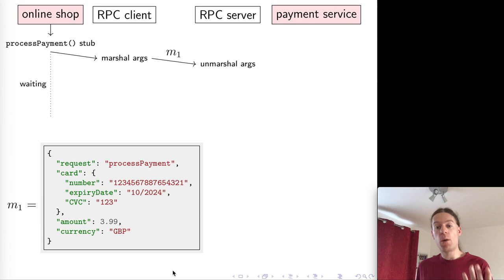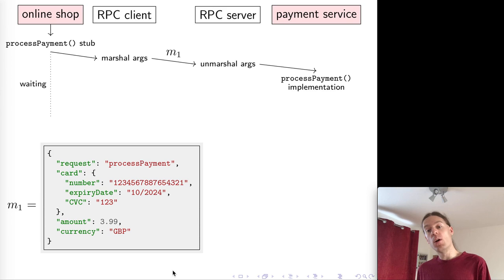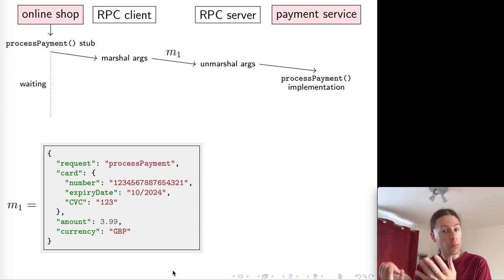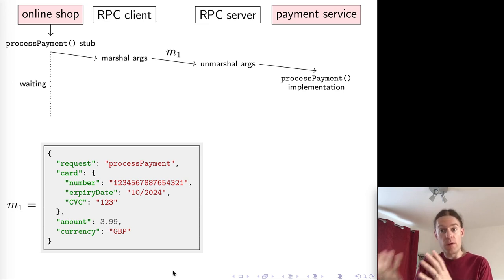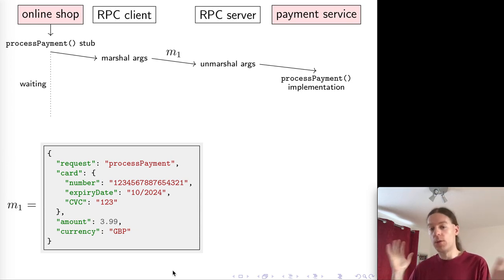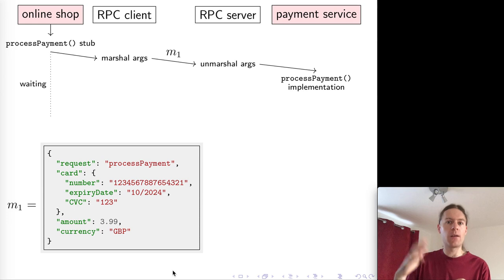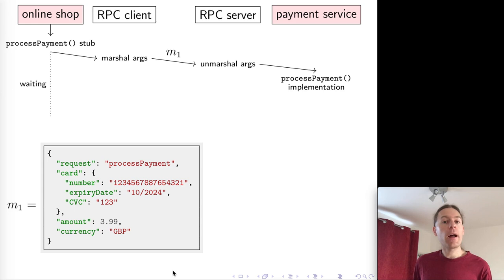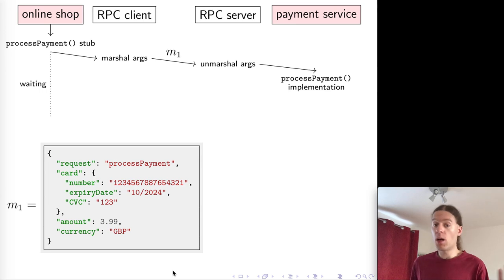On the recipient side, the RPC server receives this message and translates it back into a function call on the server side. This is where the actual implementation of the process payment function lives. The function gets called and does whatever is necessary to make the payment happen — talking to the card network, the bank, updating databases, and doing a whole bunch of extra stuff. Eventually the function returns, hopefully telling us whether the card payment was successful or not.